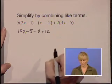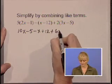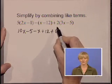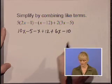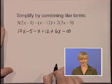Positive 2 times 3x is 6x. Positive 2 times a negative 5 is minus 10.